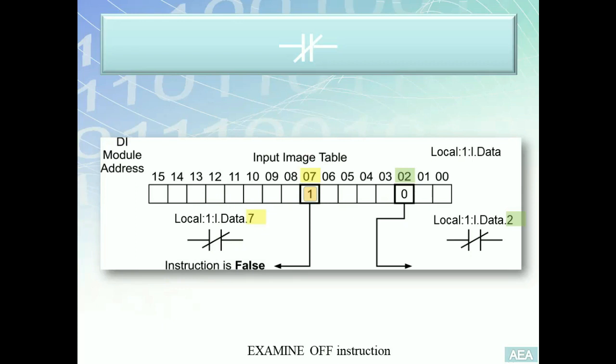Now moving to the XIO to the right. This one is examining bit number two. Similarly, I have no idea what type of switch is tied to terminal number two, but I know something for sure: this input is currently in the open state because it's reading logic zero in the PLC memory.